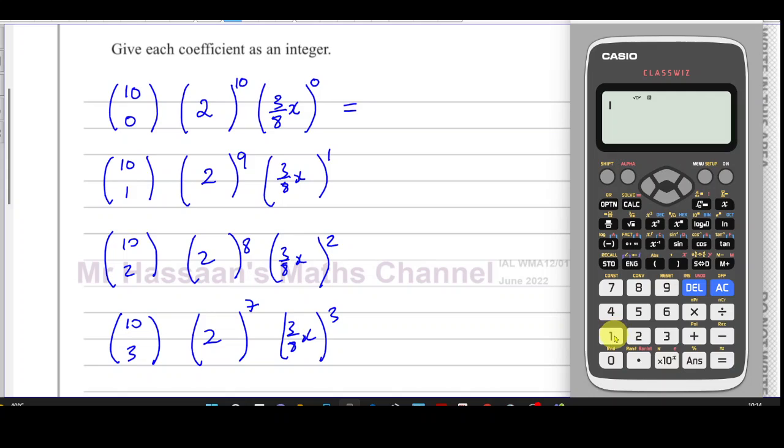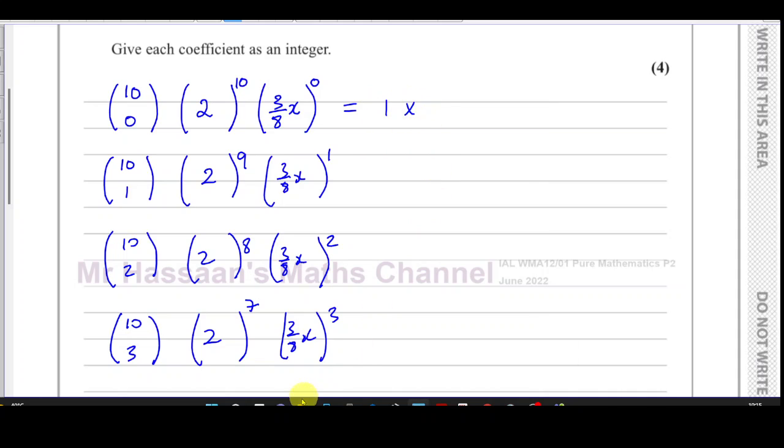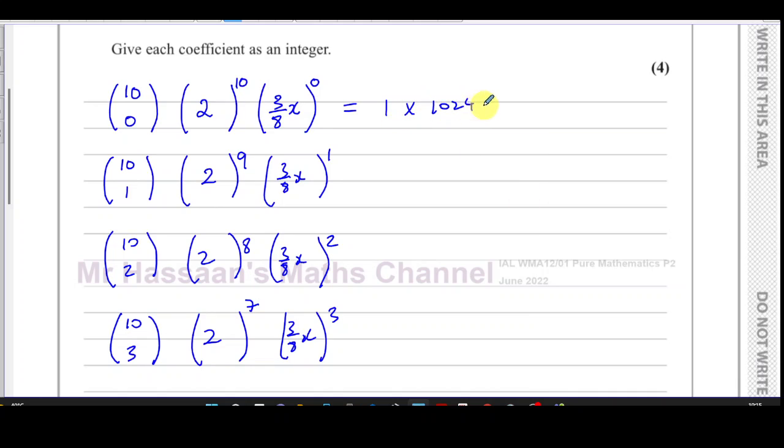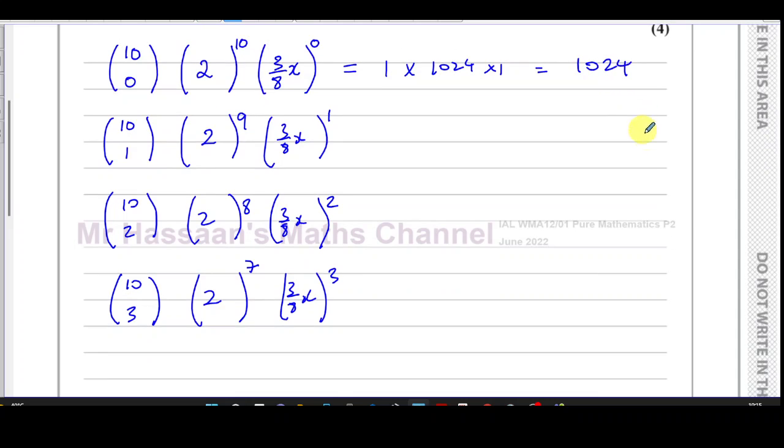Now all we need to do is to use our NCR button in the calculator. So we have 10C0. I know that's going to equal 1, but I'll just show you how to use the button. I'll press shift and then this division sign to get the NCR button. 10C0 is going to be 1. That's going to be 1 times 2 to the power of 10. So that's going to give us 1024. And anything to the power of 0 is equal to 1. So that's going to give you just 1024. That's the first term of this expansion.